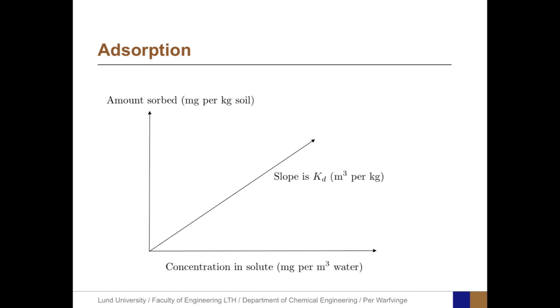And often, there's a direct proportionality. The more you have in the solute, the more you have on the soil. And the proportionality constant is Kd. And the unit, which is a bit hard to interpret, is cubic meter per kilogram.